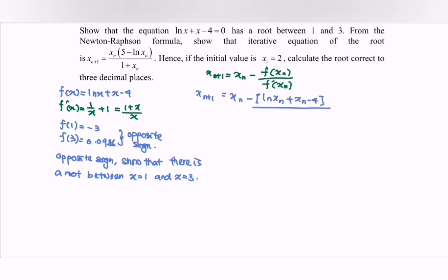.../(1 + x_n)/x_n]. Rewriting, we get x_{n+1} = x_n - x_n[ln x_n + x_n - 4]/(1 + x_n).